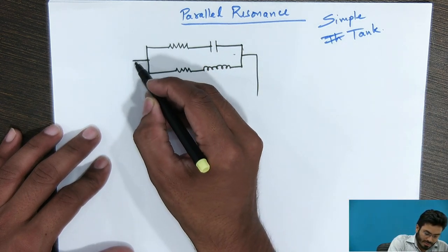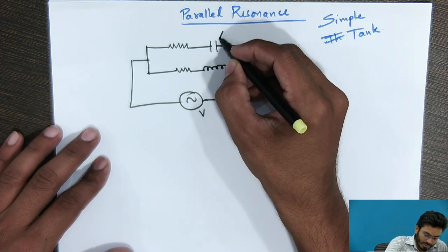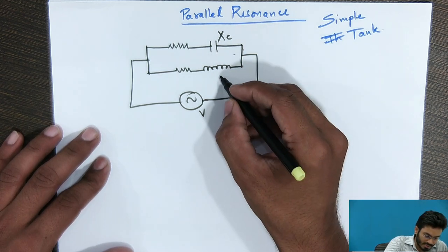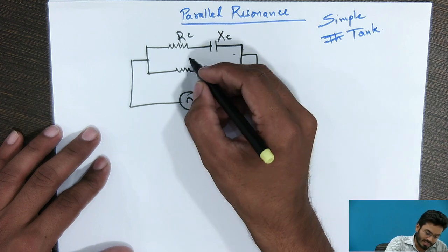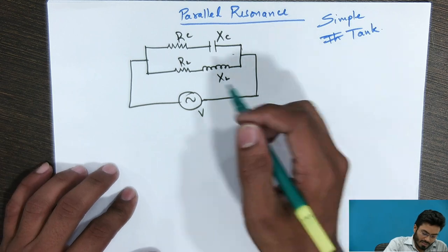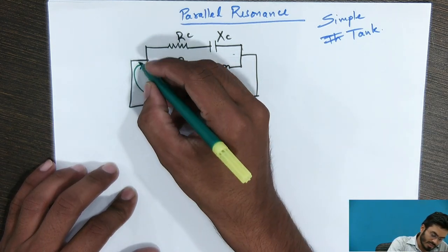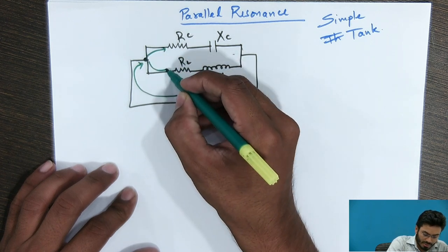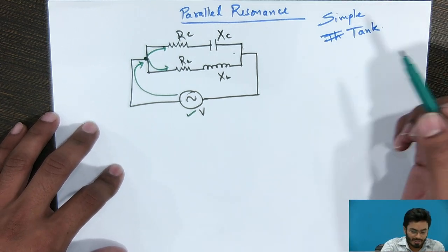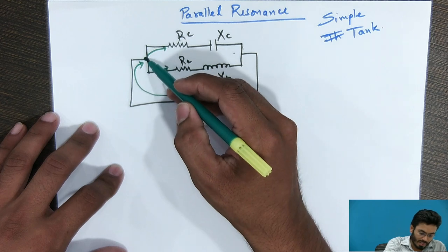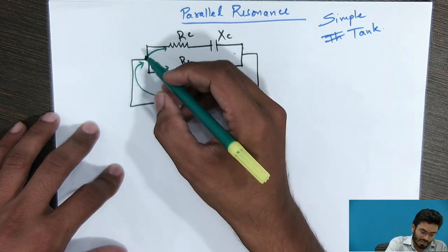I will be connecting an AC source to this circuit. The capacitor offers capacitive reactance XC and the inductor offers inductive reactance XL. The resistance in series with XC is RC and the resistance in series with XL is RL. When the power supply is turned on, current enters and splits at the node into these two branches. Unlike series resonance where voltage is split across series components, here we have a parallel node where current is split.